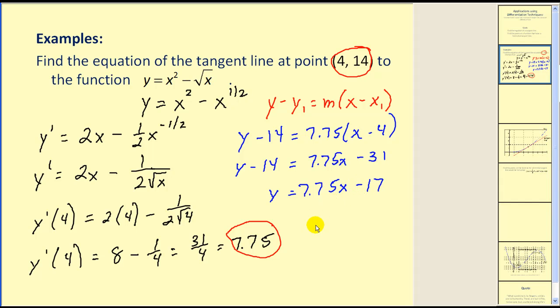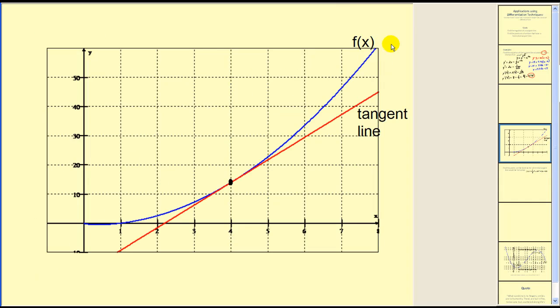Let's verify our work by looking at a graph. Here we have our function, here we have the graph of our tangent line. Here's the point that was referred to in the problem, (4, 14), and we can see that our line is tangent at that point, which verifies our work.